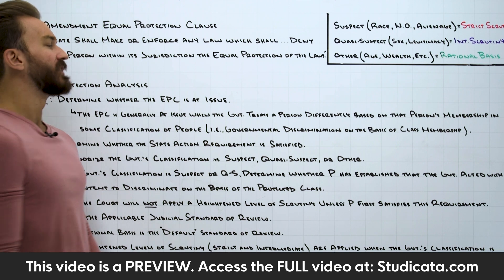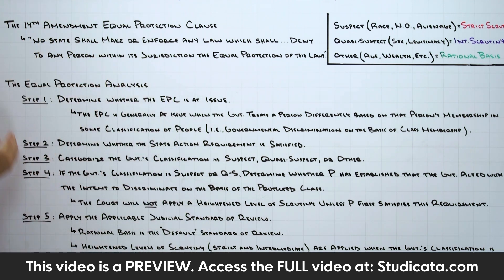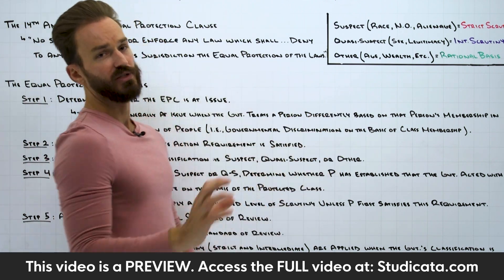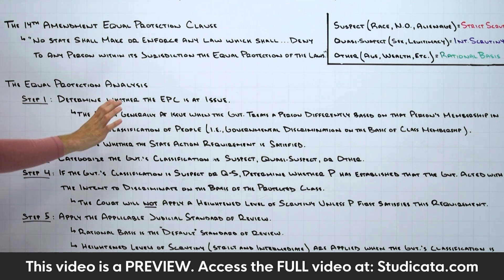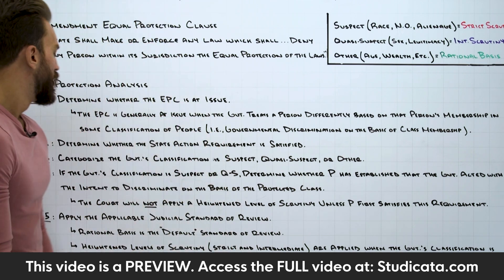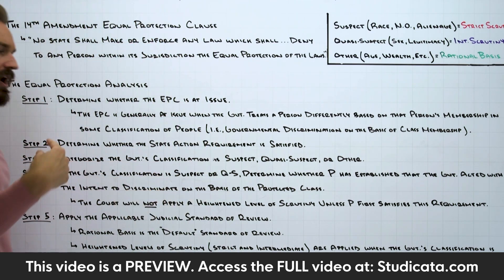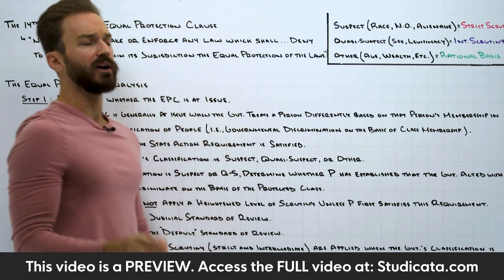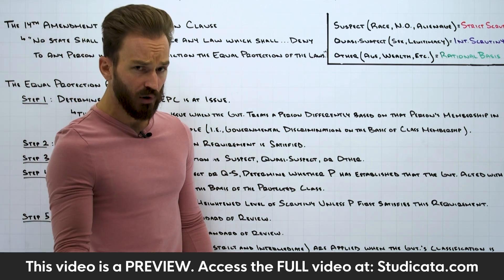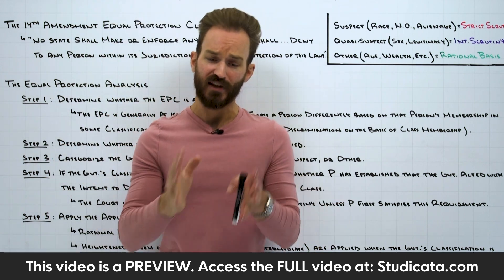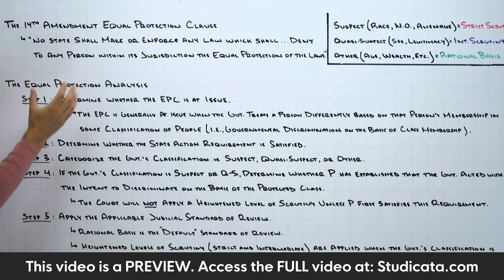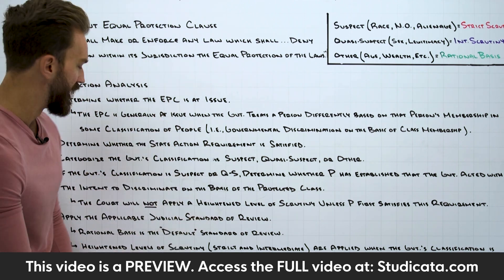Step two: we determine whether the state action requirement is satisfied. We covered the state action requirement in detail in a prior video. We need to make sure that the challenged action is attributable to the government — it can be local, state, or federal government. The Equal Protection Clause does not apply to private parties.